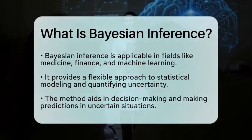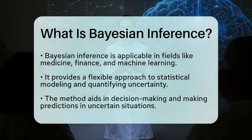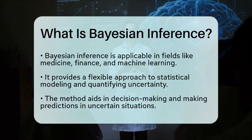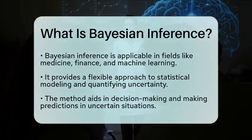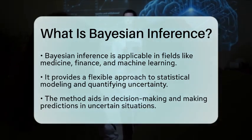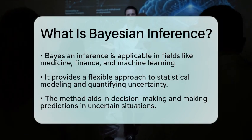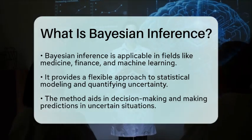In summary, Bayesian inference is a systematic way to update beliefs based on new evidence, using a mathematical framework that helps us make informed decisions in the face of uncertainty.